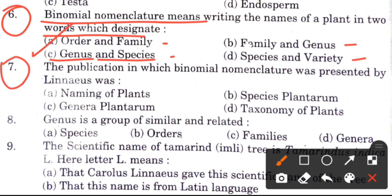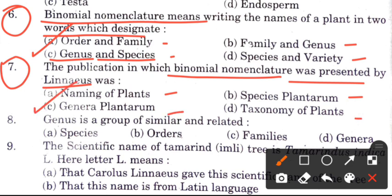Question 7: The publication in which binomial nomenclature was presented by Linnaeus. Question 8: Genus is a group of similar and related — options are species, orders, families, or genera. The answer is A, species.